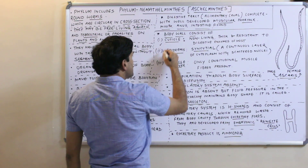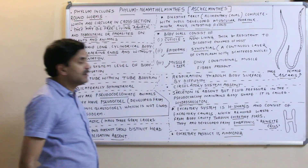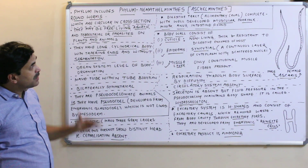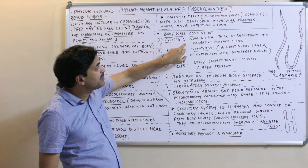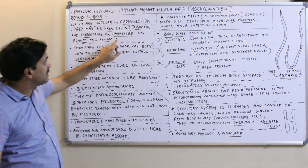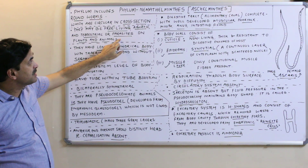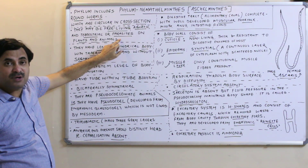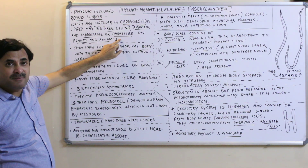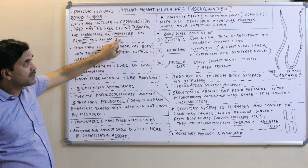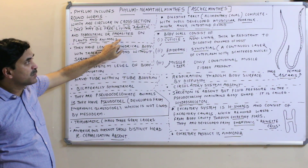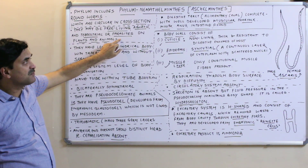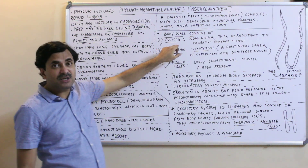The body wall consists of cuticle, epidermis, and a muscular layer. The cuticle is non-living, thick, and resistant to the digestive enzymes of the host — important because organisms like Ascaris are parasites in human beings, so the thick cuticle protects them against the host's digestive juices.